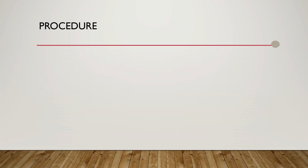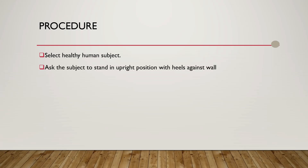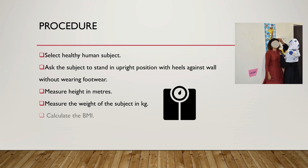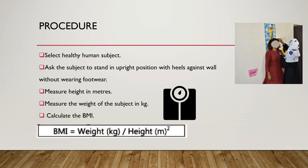Now let's see how to perform this practical. First, select a healthy human subject. Then ask the subject to stand in an upright position with the heels against the wall, without wearing footwear. Measure the height in meters, then measure the weight of the subject in kg. Then calculate the BMI using the formula: BMI equals weight in kg divided by height in meter square.